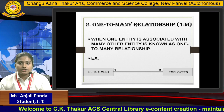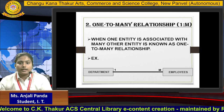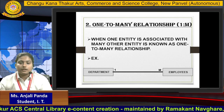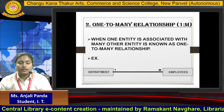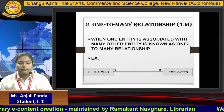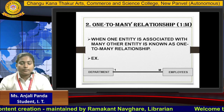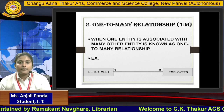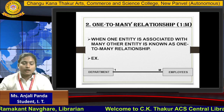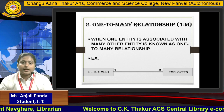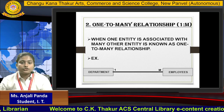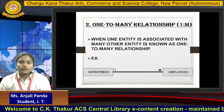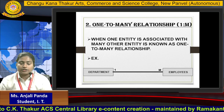Next is one-to-many relationship. When one entity is associated with many other entities, it is called a one-to-many relationship. For example, department and employees: in one department there are many employees. Department is one type of entity and employees are another type of entity, so this is an example of one-to-many relationship.